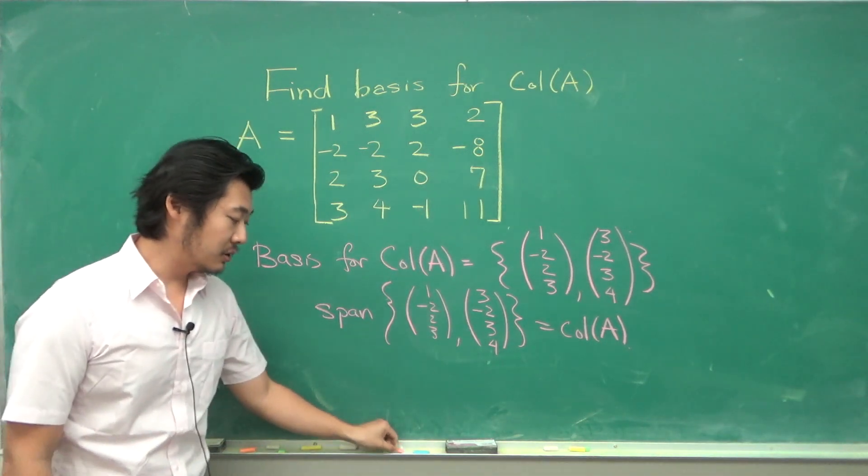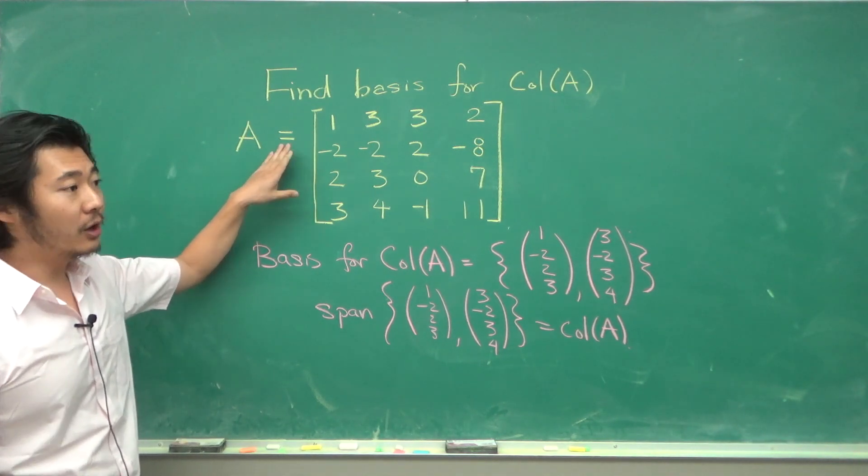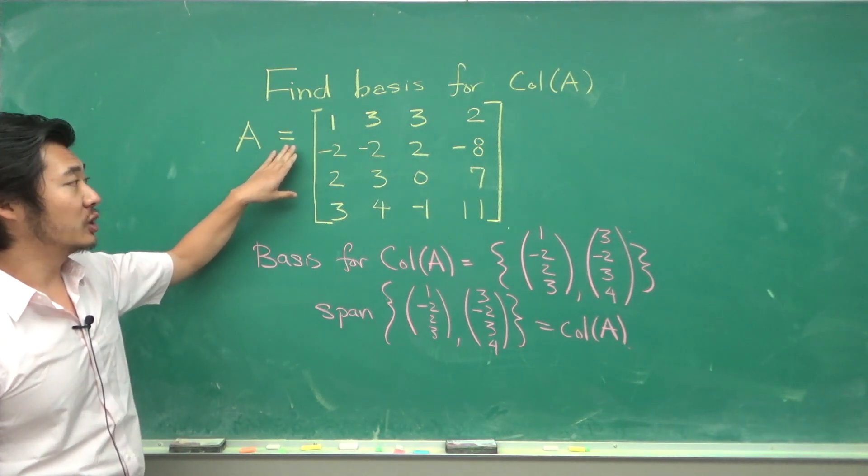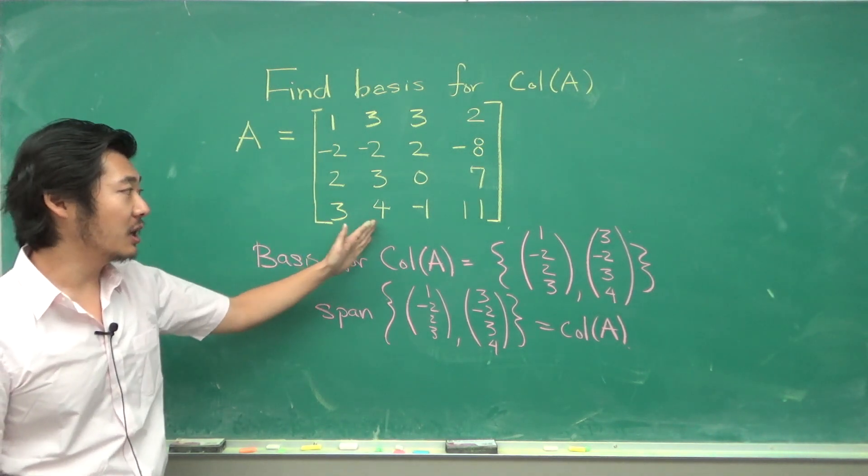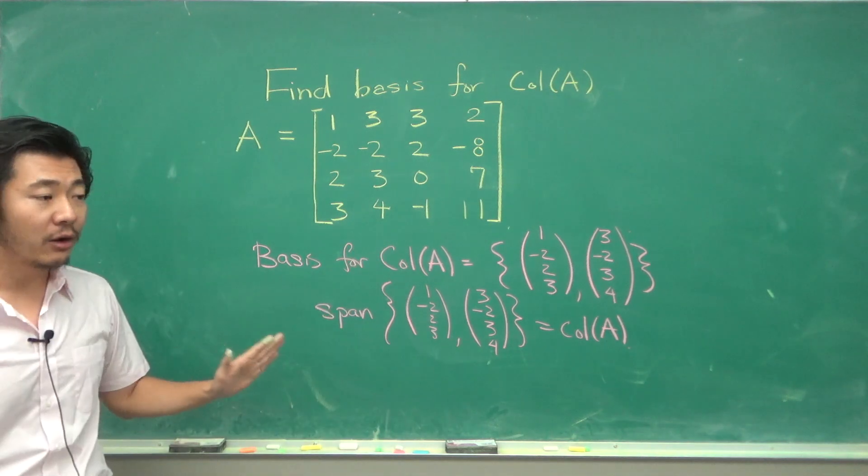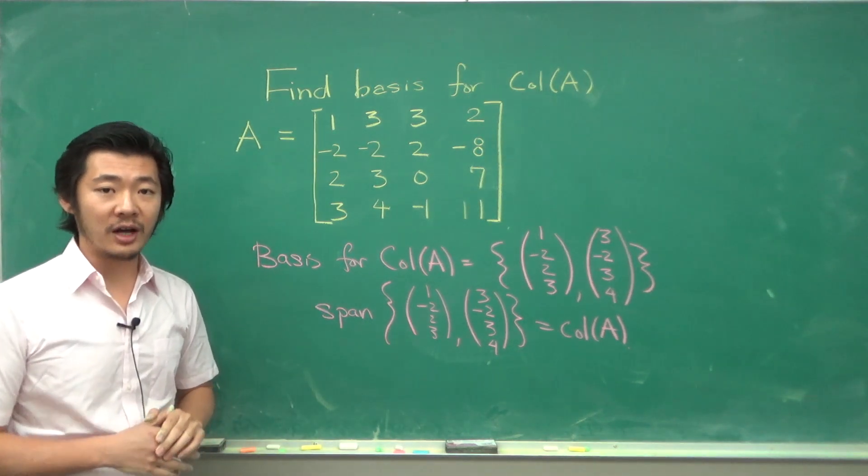In general you don't need to row reduce all the way to row reduced echelon form. All you need to know is which ones are the pivot columns, and then go back to the original matrix and pick out the columns from the original matrix that correspond to the pivot columns, and those will form a basis for your column space of A.